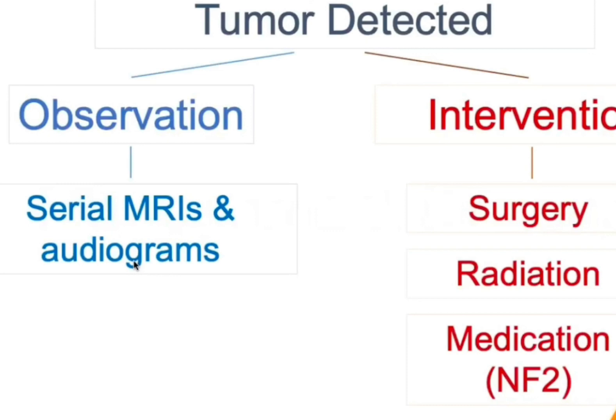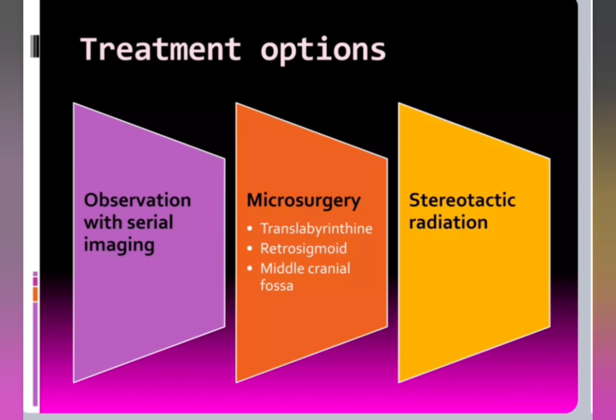Once the tumour is detected, you can do observation with serial MRIs and audiograms, or intervention such as surgery — the treatment of choice — radiation in some cases, and rarely medication. Treatment options are: observation with serial imaging to monitor tumour growth; surgery, which may be trans-labyrinthine, retrosigmoid, or middle fossa approach; or stereotactic radiation.